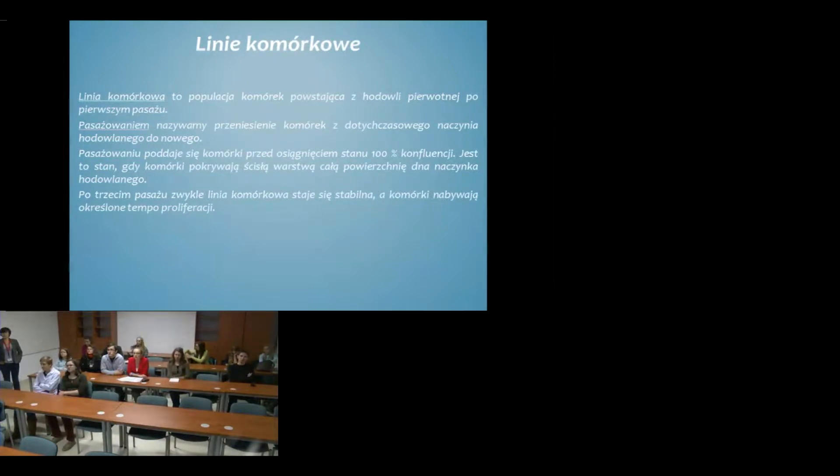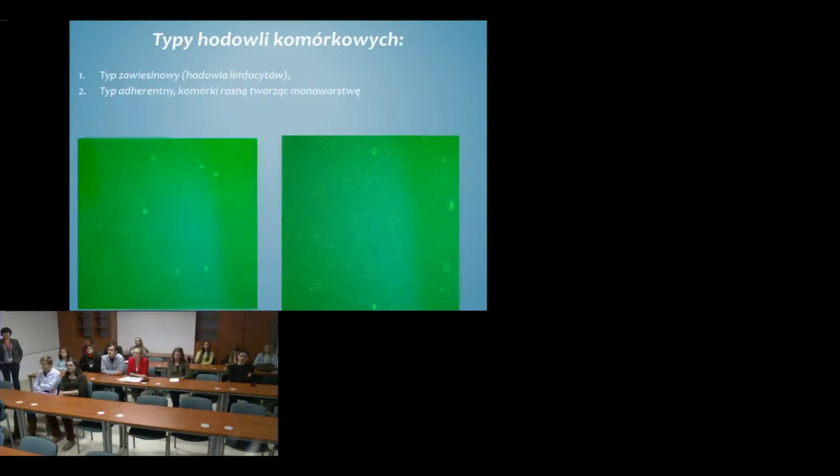Po trzecim pasażu zwykle linia komórkowa staje się stabilna, a komórki nabywają określone tempo proliferacji.